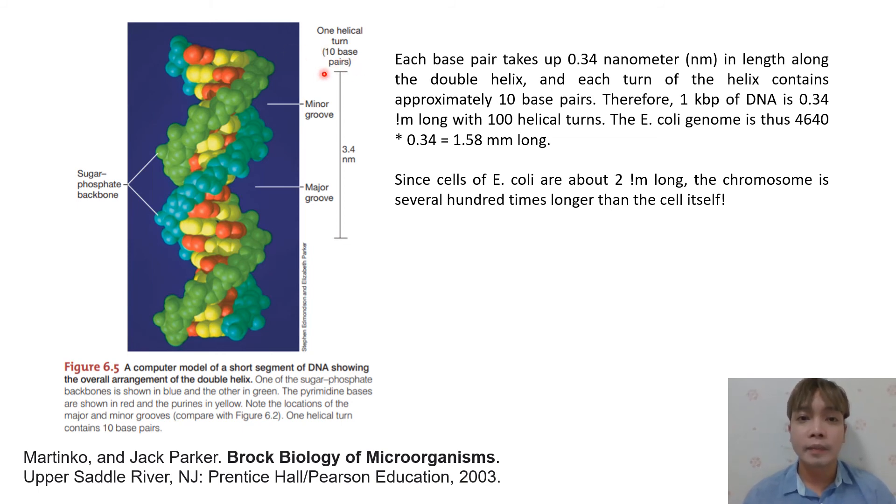And so approximately 10 base pair—it depends on the class of helical turn or type of DNA. So around 10, 11, or 12. And when it turns, we have this minor groove and major groove. Inside, this yellow and orange, those are our nitrogenous bases. And this is our sugar-phosphate backbone. One helical turn, again, that is made up of 10 base pairs.